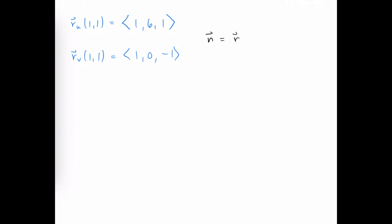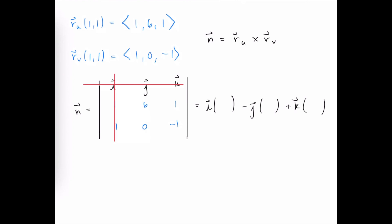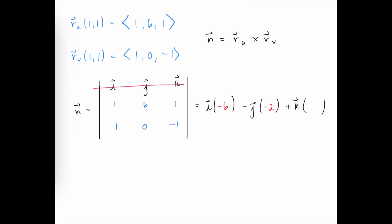Our normal vector is the partial of r with respect to u crossed with the partial of r with respect to v: ⟨1, 6, 1⟩ × ⟨1, 0, −1⟩. Eliminating the row and column containing i gives −6 − 0, so the i coefficient is −6. For j, we get 1·(−1) − 1·1 = −2, so the j coefficient is −(−2) = 2. For k, we get 1·0 − 6·1 = −6. So the normal vector is ⟨−6, 2, −6⟩.